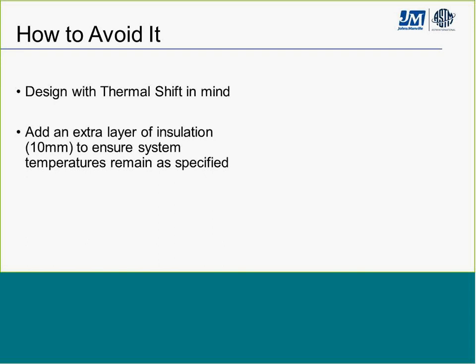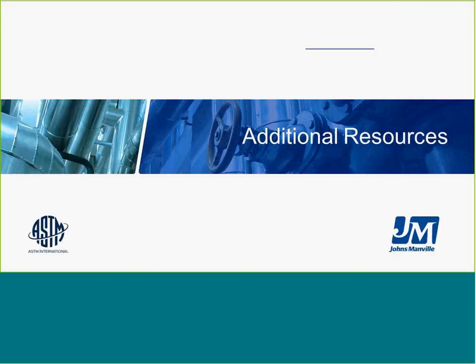To avoid the thermal shift problem, you want to design with that shift in mind. Generally, you can add an extra layer of insulation — in most cases, 10 millimeters would probably do it — but you should refer to the manufacturer's recommendations to ensure you're getting the thermal performance you need. With that, Doug concluded his section, turning it back over to Kim to talk about additional resources.